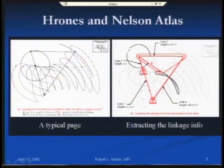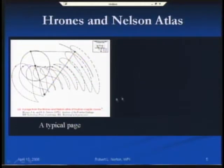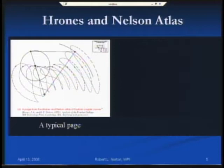But how do we find a linkage that gives us a curve of the shape we like? Typically in a design situation we're coming at this from the other direction — we're not just arbitrarily picking a linkage and saying 'aren't those coupler curves pretty.' We typically have some idea of what shape of curve we would like, and we need to find the linkage. This is the inverse problem, and it turns out it's a relatively difficult problem to solve.